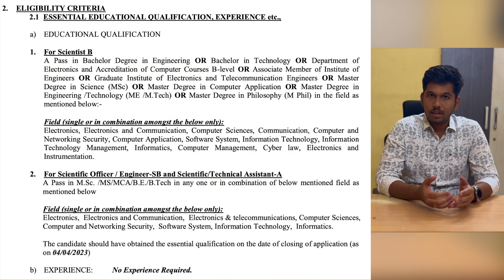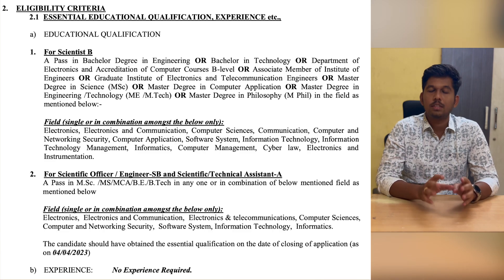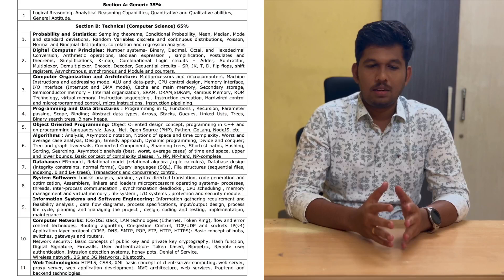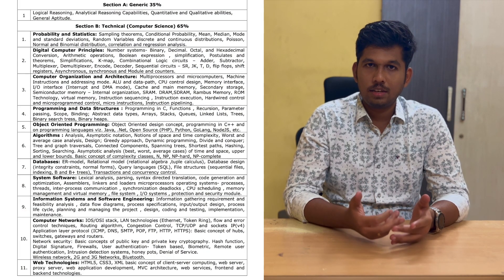Regarding the education qualification, one should possess a BE, BTech, or MCA, or MSc in Electronics or Computer Science, Information Technology, or relevant fields. When you look at the exam pattern, all three posts consist of an MCQ-based exam for 120 marks, out of which 42 questions are from aptitude and 78 questions are from the technical portion. Whereas Scientific Technical Assistant A requires only a written exam to be qualified, Scientific Officer and Scientist B require both a written test and an interview. The syllabus for all three posts — Scientific Officer and Scientific Technical Assistant A — covers Computer Science subjects.